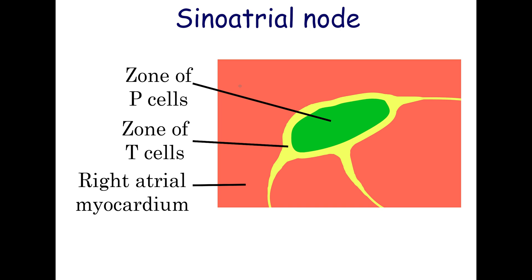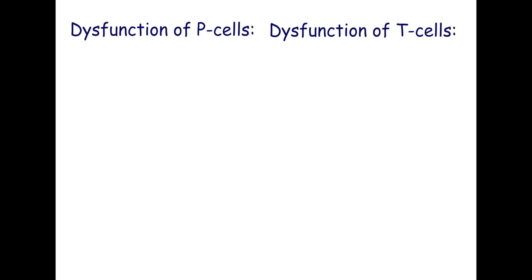located centrally, and transitional cells, also called T-cells, located peripherally. It is considered that the impulse is generated in the P-cells. The T-cells transmit the impulse.